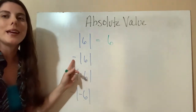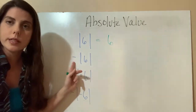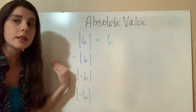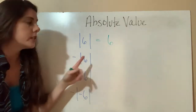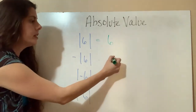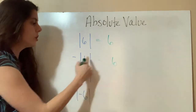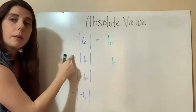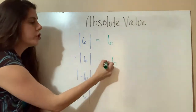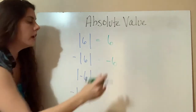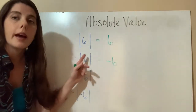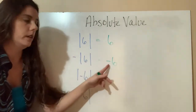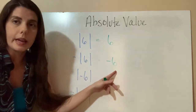But then we're taking the opposite of that. This negative sign is on the outside. So we calculate what's on the inside, which is just a positive six, but then we're taking the opposite — we're changing it. So the negative absolute value of six is negative six.